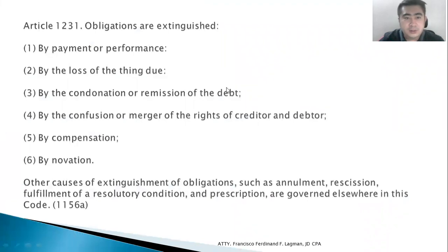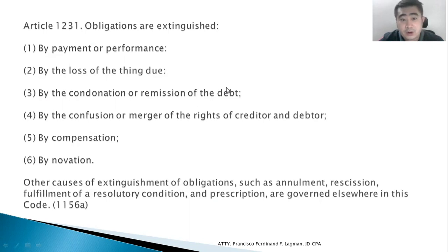So these are the modes of extinguishment of obligations. We have payment or performance — this is the first part. Next, we have loss of the thing due. We have condonation or remission of the debt. We have confusion or merger of rights of a creditor and debtor. We have compensation. We have novation. Now, this enumeration is not exclusive, because we have other causes of extinguishment of obligations, such as annulment, rescission, fulfillment of a resolutory condition, prescription.